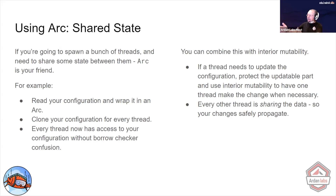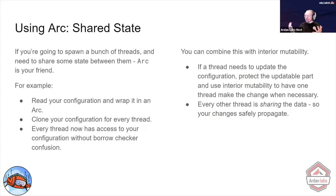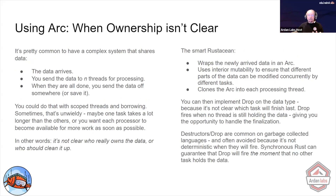If you need some sort of gatekeeper system to handle buffering going into a physical piece of hardware, effectively ARC lets you tell the borrow checker: nope, this is meant to be shared. And as long as you handle the mutability using interior mutability, you're golden.